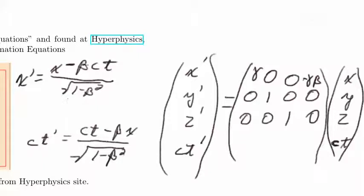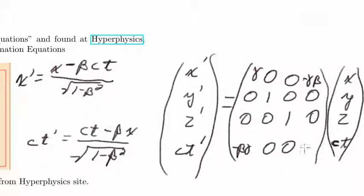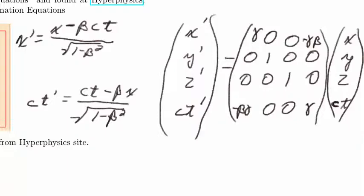The first line says gamma times x plus zero times y plus zero times z plus negative gamma beta times ct, and the last line has negative beta gamma times x plus zero y plus zero z plus gamma times ct. So the matrix looks exactly symmetrical: x prime row is [gamma, negative beta gamma] and ct prime row is [negative beta gamma, gamma]. This Lorentz transformation equation does the same thing to space and time — not different things.